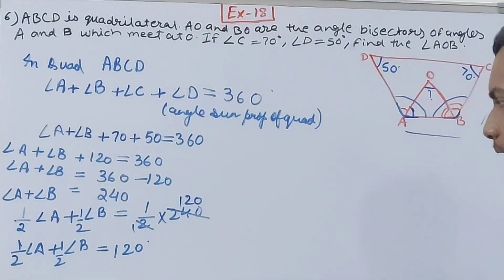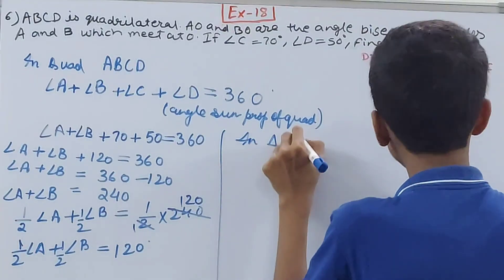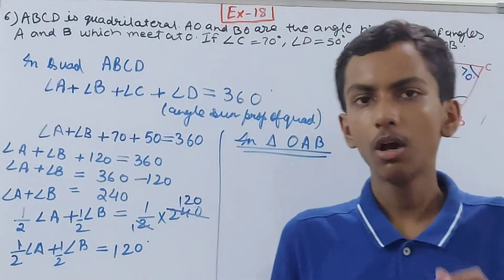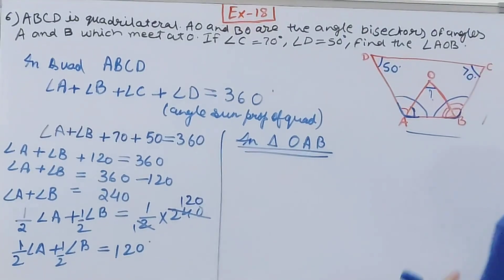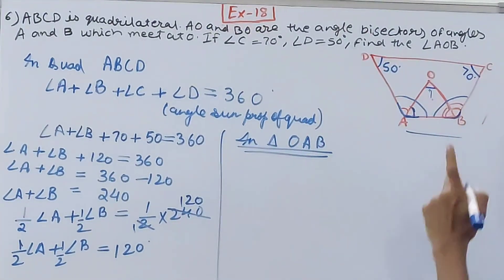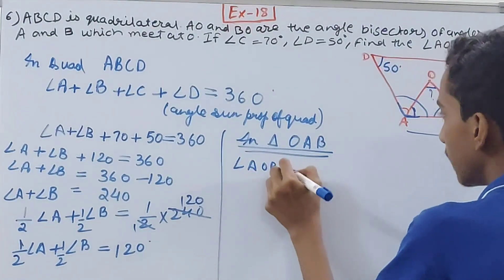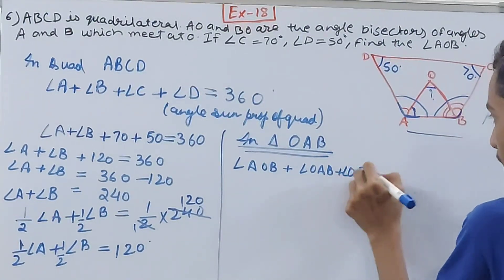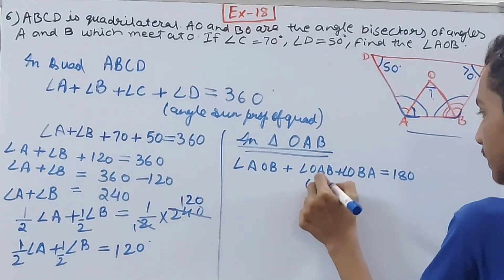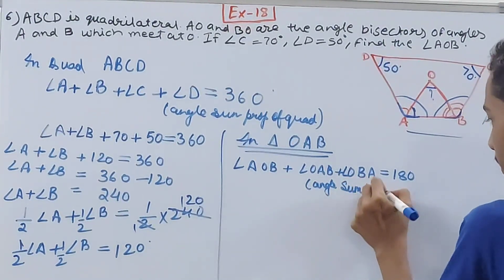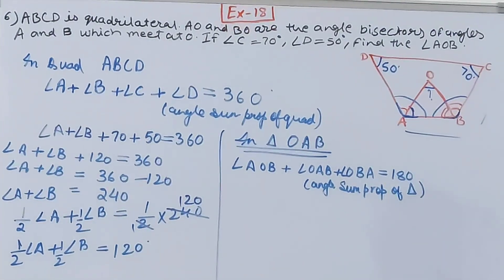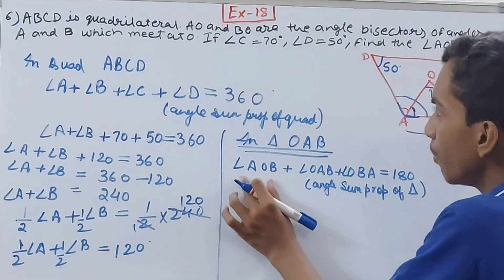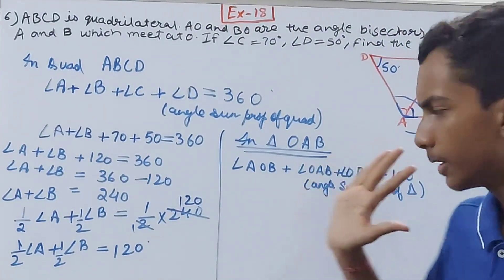Now we shift focus from the quadrilateral to triangle OAB. In triangle OAB, there are three angles. By the angle sum property of a triangle, angle AOB plus angle OAB plus angle OBA equals 180 degrees.